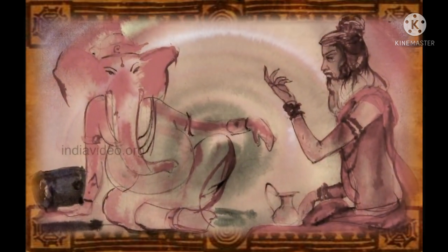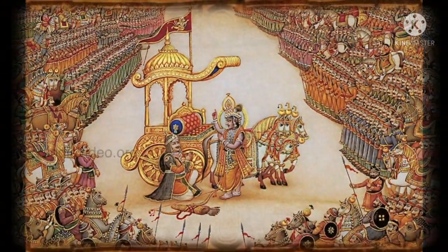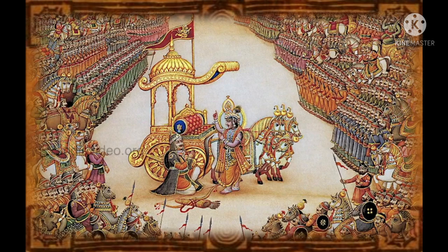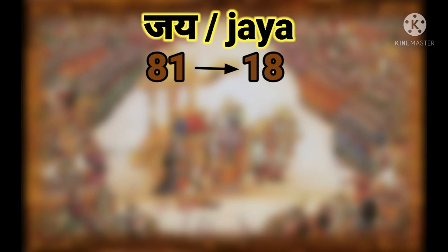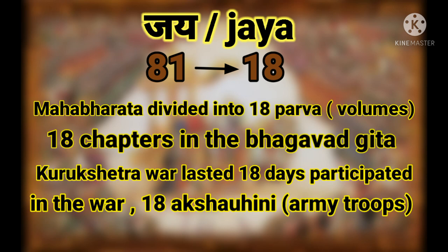Some scholars say the Katapayadi system is much older than we think. A very interesting possible occurrence of Katapayadi comes from the epic Mahabharata. The original name of the epic given by the author Veda Vyasa was Jaya, which in the Katapayadi system equals 18 — a recurring number in the epic. The Mahabharata is divided into 18 Parvas or volumes, there are 18 chapters in the Bhagavad Gita, the Battle of Kurukshetra lasted 18 days, and 18 Akshauhini armies participated. This suggests the Katapayadi system may have existed even at the time when the Mahabharata was written, several centuries before BCE.